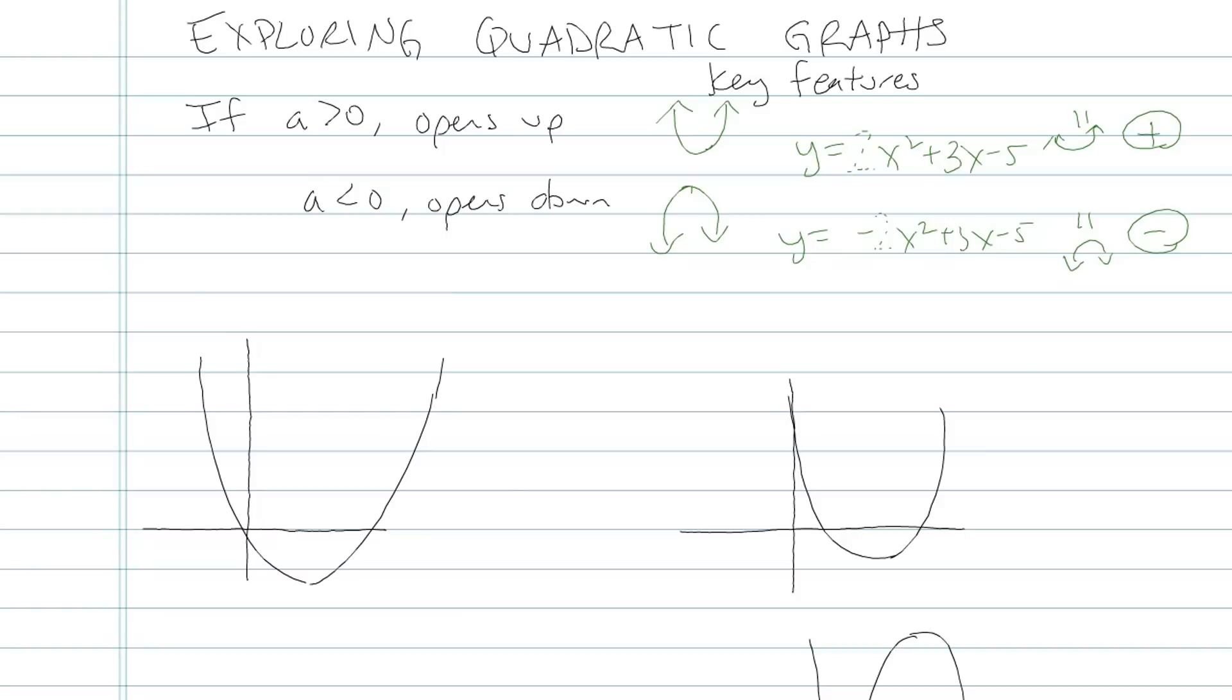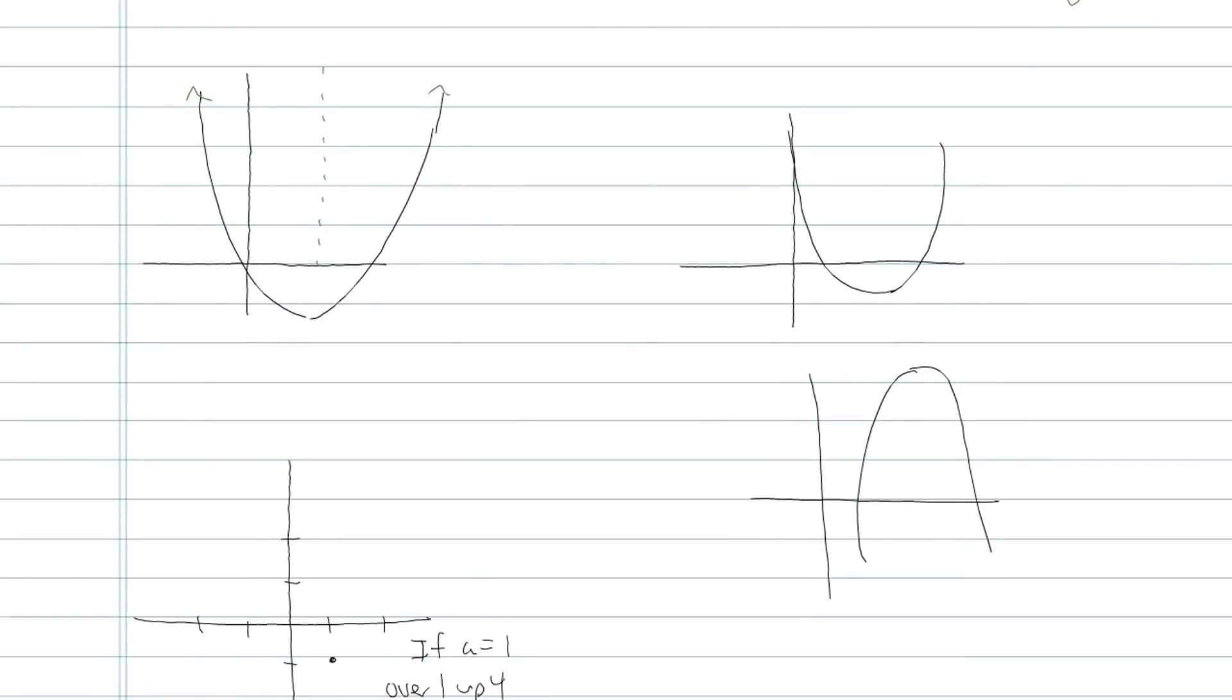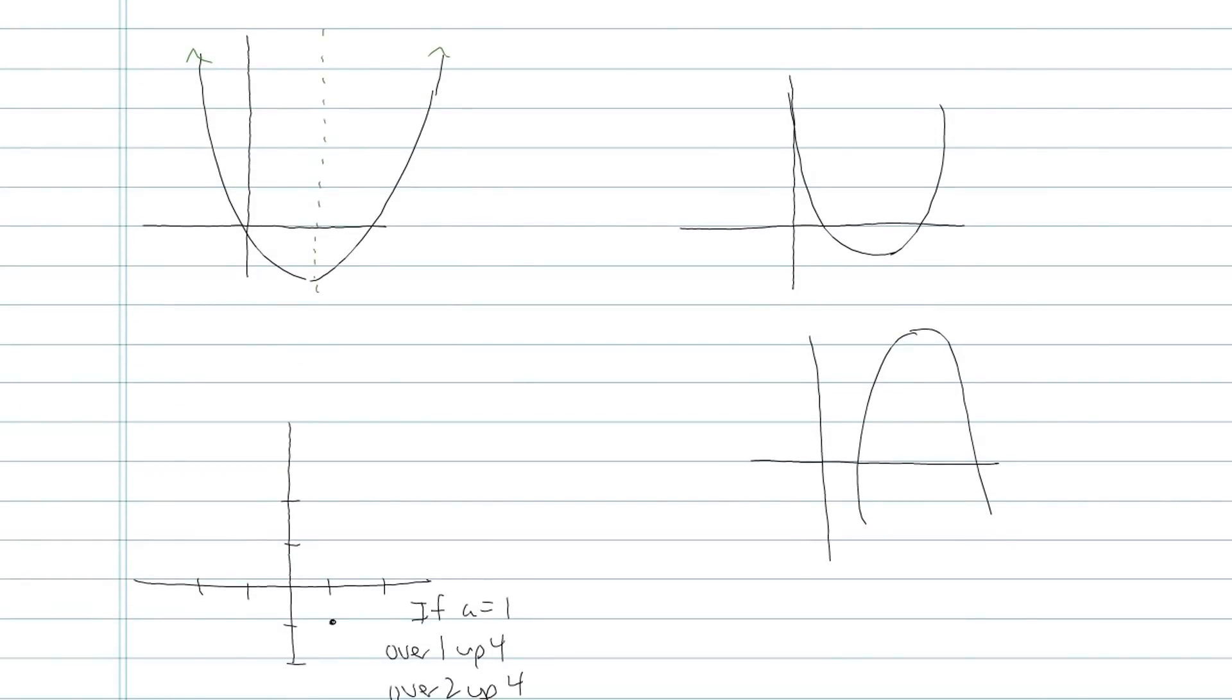The next thing we're going to be looking at is the symmetry of parabolas. Symmetry means there's a vertical line that you could fold the parabola along and it would be symmetrical along that line. It's called the axis of symmetry. And the equation to find it is x equals negative b over 2a. Because the equation of a vertical line is always x equals some constant and the constant comes from doing negative b divided by your 2a number.